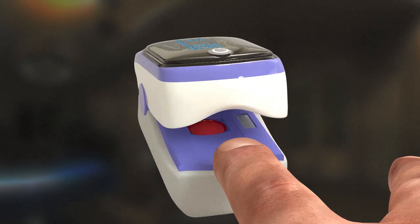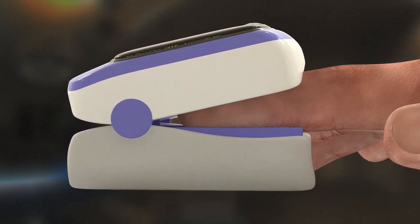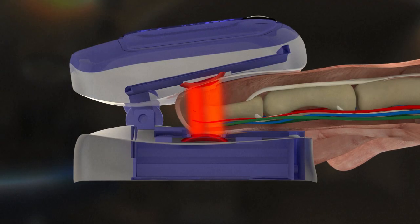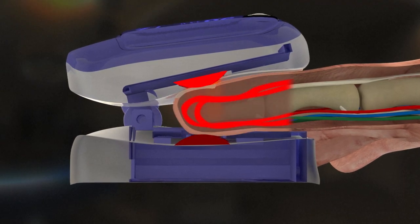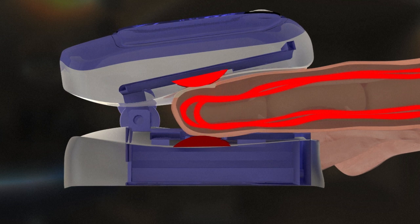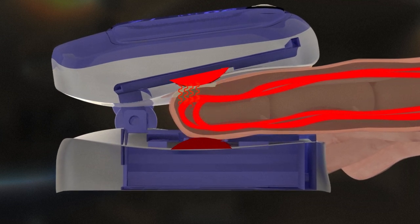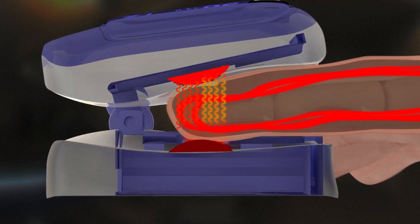It's typically attached to a patient's fingertip or earlobe. It emits two types of light. Its effectiveness hinges on the ability of blood to absorb red and infrared light depending on its oxygen saturation.